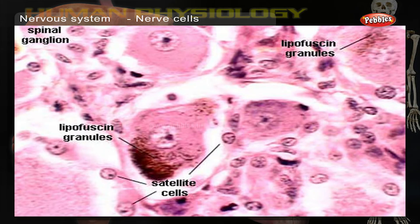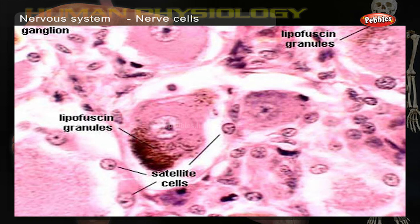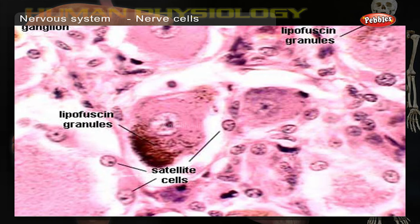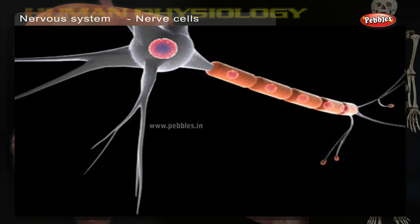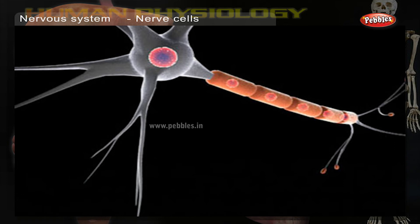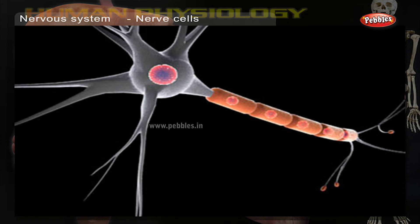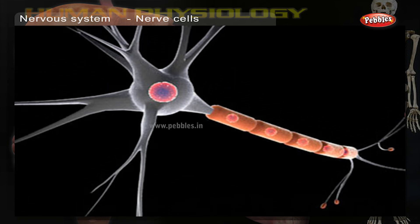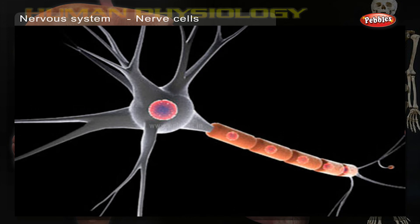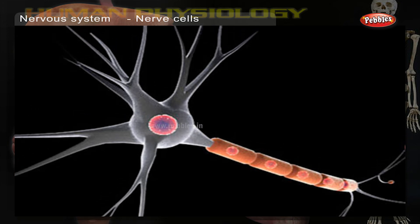Outside the brain and spinal cord, the groups are called ganglia. The remaining areas of the nervous system are tracts of axons — the white matter — so called because of the white myelin sheath.